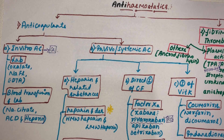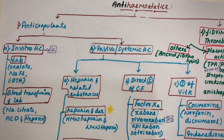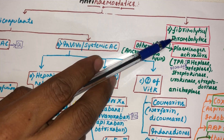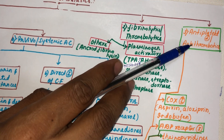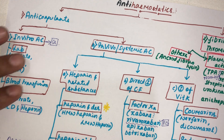In the last class we studied about haemostatics. In contrast, in this video we are going to study about anti-haemostatics, which stops clot formation — stopping thrombus and emboli formation. Anti-haemostatics are classified into anti-coagulants, fibrinolytics or thrombolytics, and anti-platelet drugs or anti-thrombotics.